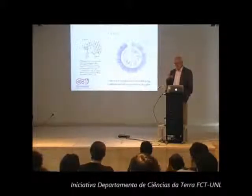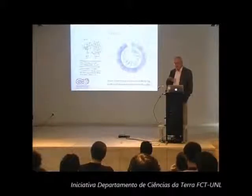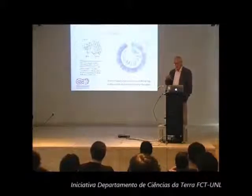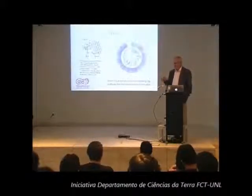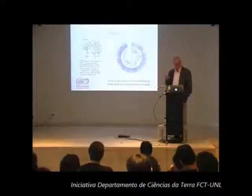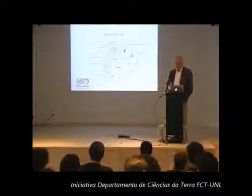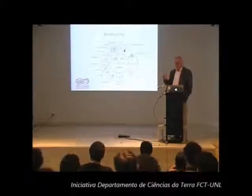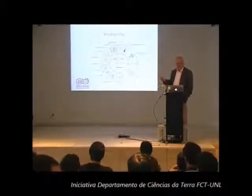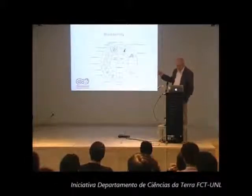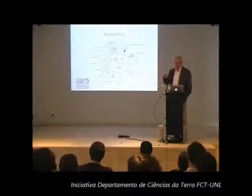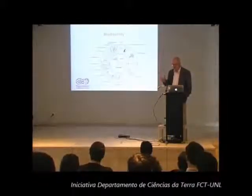I want to start briefly to talk about biodiversity, and then I will connect that with trees and some of the new methods in macroevolution to highlight some of the questions that we can consider. When we think about modern biodiversity, sometimes we represent the information like this — a pie chart trying to show the relative importance of different groups. That's very familiar.